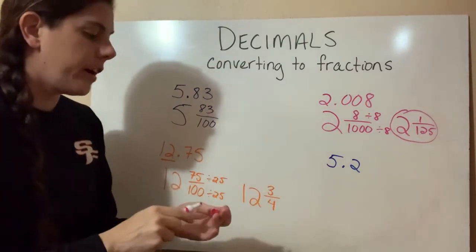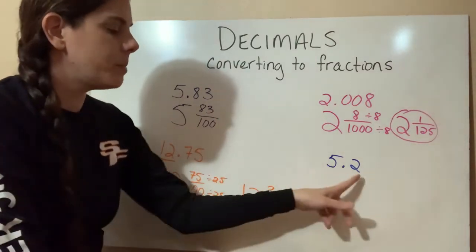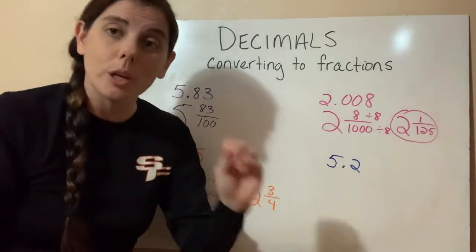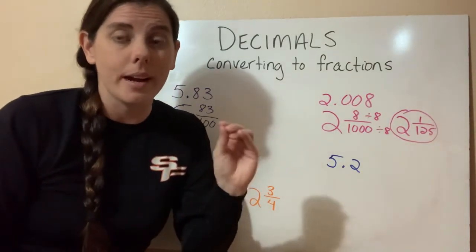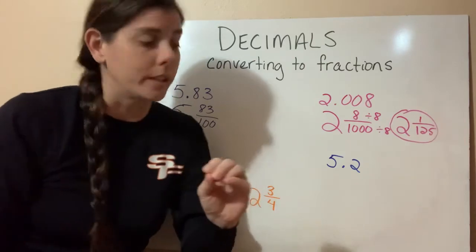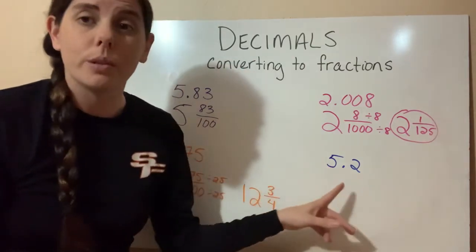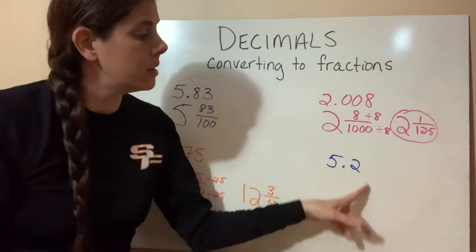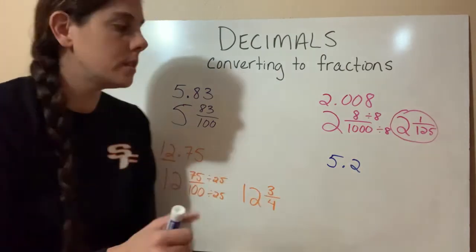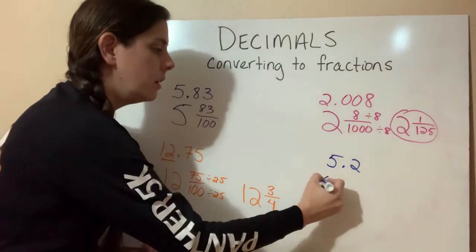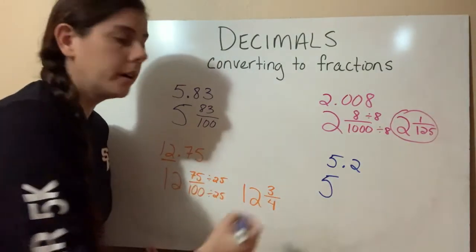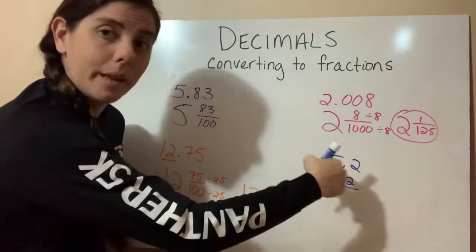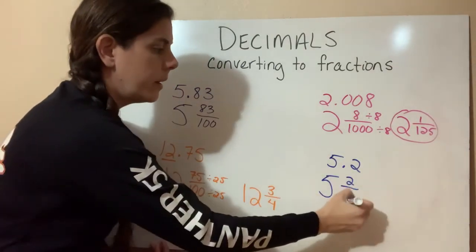Our last one is 5.2. When we have something simple like that, it's really easy to just say 5.2. But again, use our place values because this is going to help us convert it into a fraction. So instead of 5.2, say 5 and 2 tenths. So there's a 2 in the tenths place. So 5 is our whole number. 2 is our numerator. And the place value that we go to is 10.